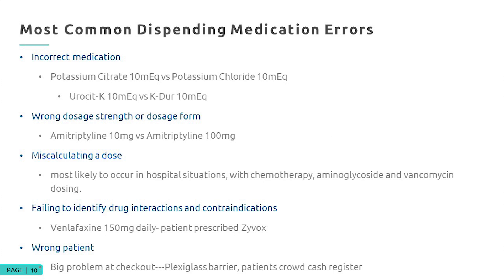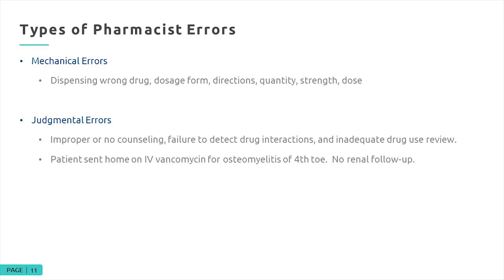Pharmacist errors include mechanical errors such as dispensing the wrong drug, wrong dosage form, wrong directions, wrong quantity, strength, and dose. Judgmental errors can happen as well, including improper or no counseling. I've read that you can eliminate 70% to 80% of dispensing errors by simply reading the prescription label to the patient. Failure to detect drug interactions like the Zyvox interaction with venlafaxine, and inadequate drug use review, are also significant error categories.